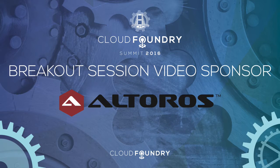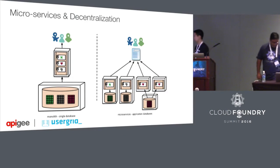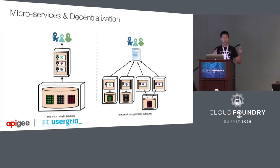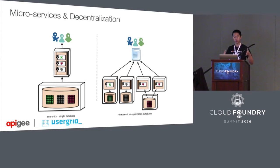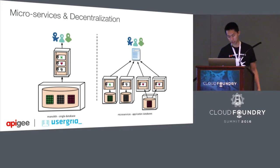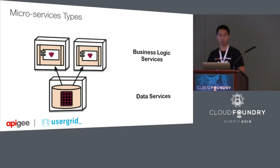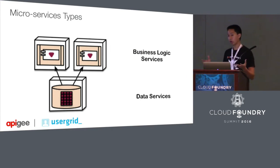We're going to talk a little bit about graph databases and microservices. To give a little background on Apache UserGrid, which is a backend as a service, we want to talk about microservices. We all know the goal of a microservice is to break big monoliths into small services. Going a little bit deeper, there are two types of microservices you can break them up into: business logic services and data services.